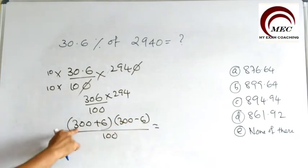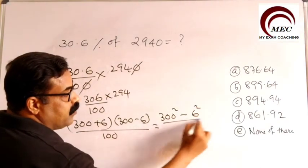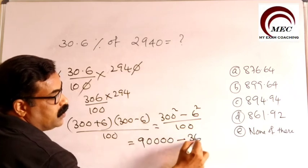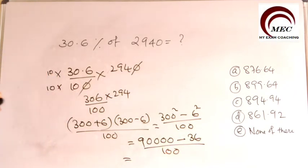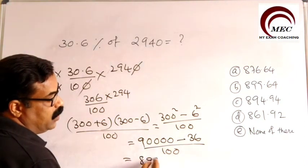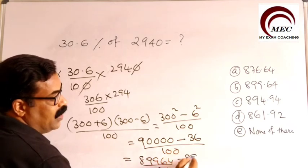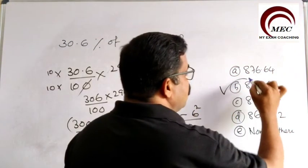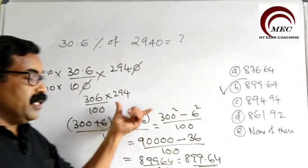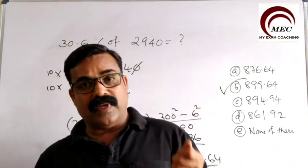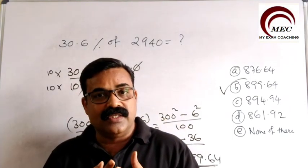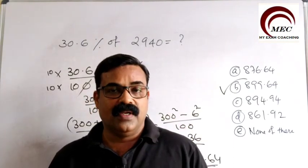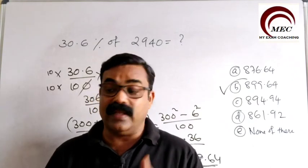A plus B into A minus B equals A squared minus B squared. That is 300 squared minus 6 squared, divided by 100. So 300 squared is 90,000, minus 6 squared which is 36, divided by 100. I got 89,964 divided by 100, which equals 899.64. So I can mark the correct option as 899.64. A minus B into A plus B, A squared minus B squared, A cubed minus B cubed — all these are algebraic identities we learned in small classes, and we will be using them throughout the topic of simplification.